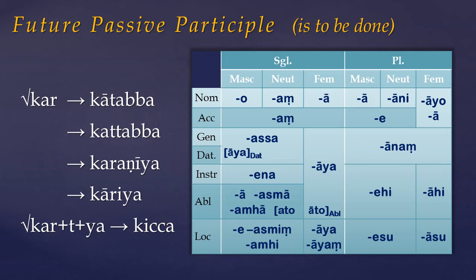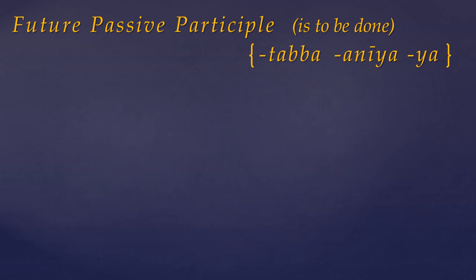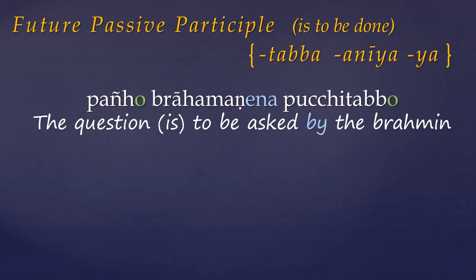Let's look at how the future passive participle is used. Like the past participle, the future passive participle can be used as a finite verb, usually in a passive or impersonal manner, where any agent, if expressed, is in the instrumental case. For example: the question is to be asked by the Brahmin. Apparently it can be used in an active sense with intransitive verbs of motion, but unfortunately I can't find any examples.